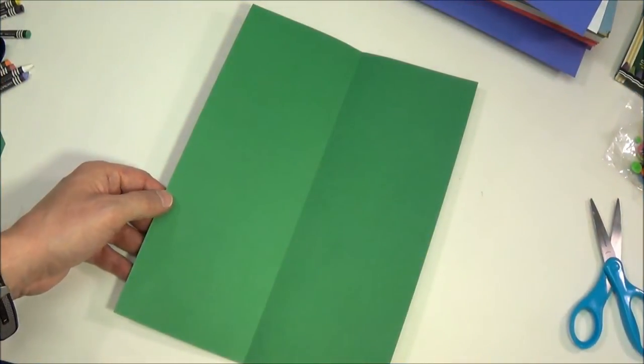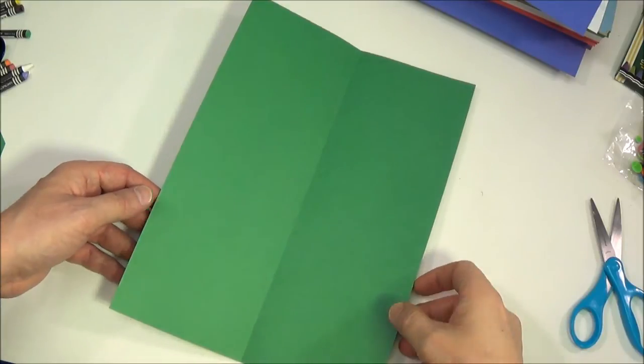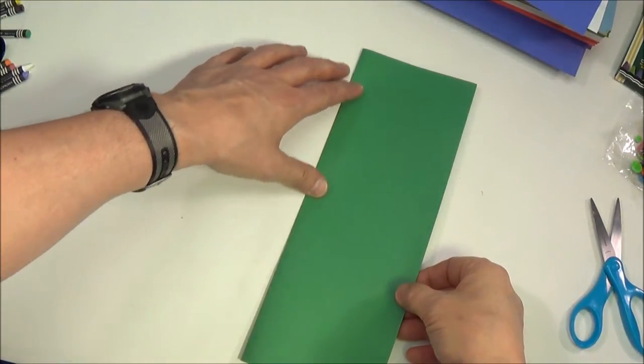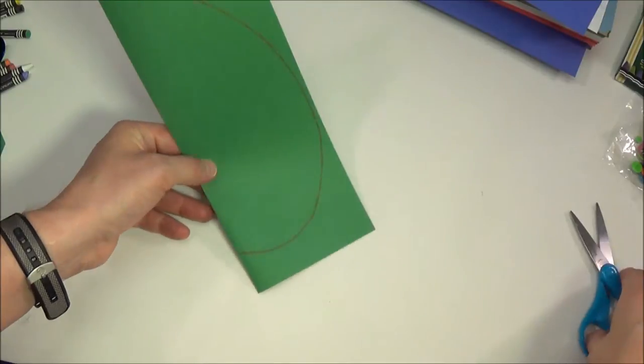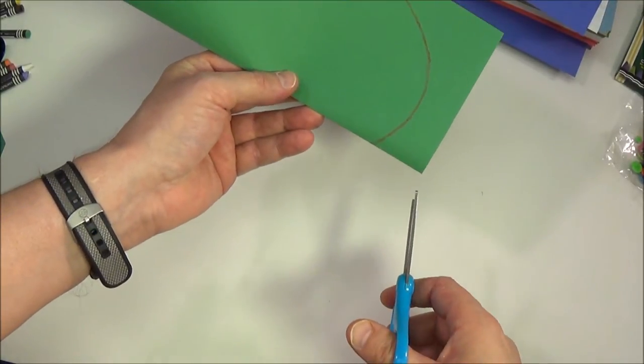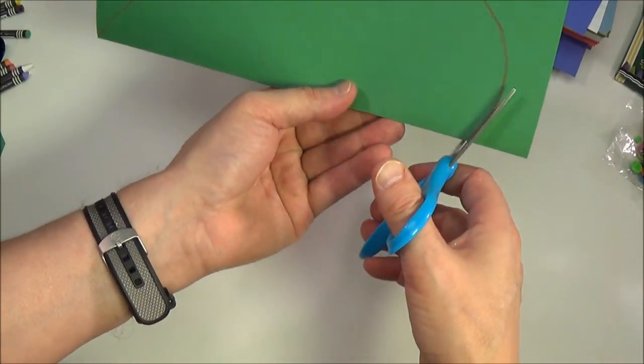Take a sheet of green construction paper and fold it in half lengthwise. Cut out a heart-shaped leaf and also a stem from this paper.